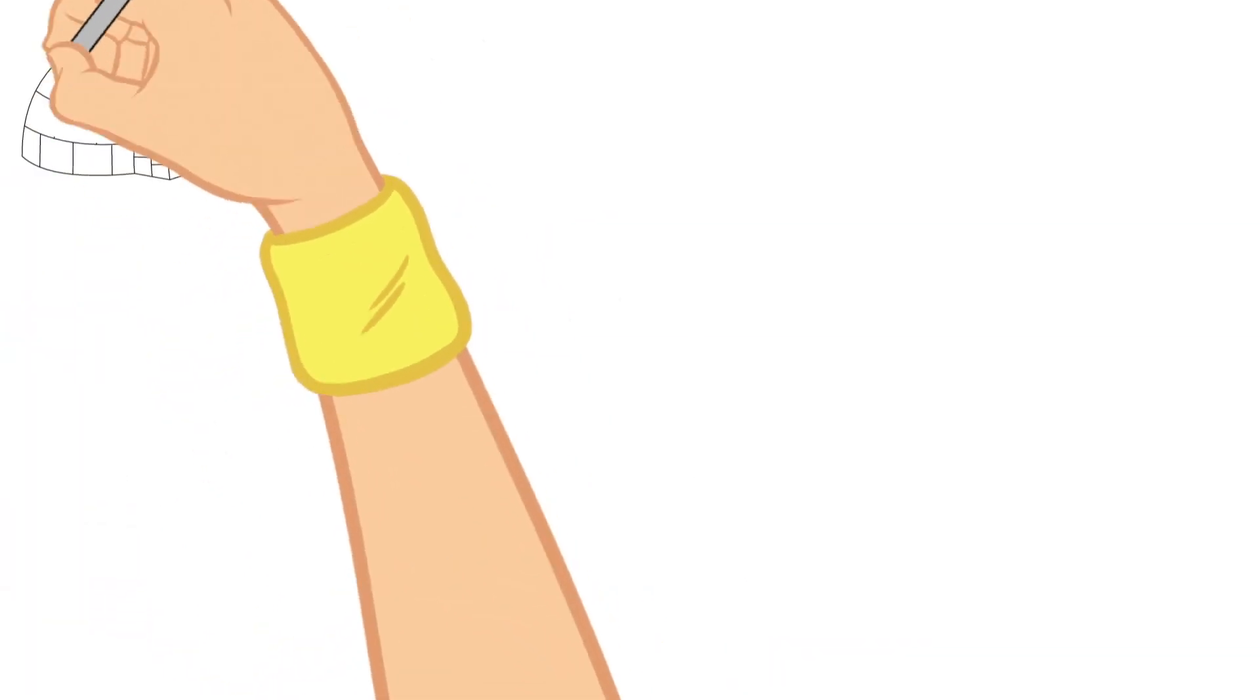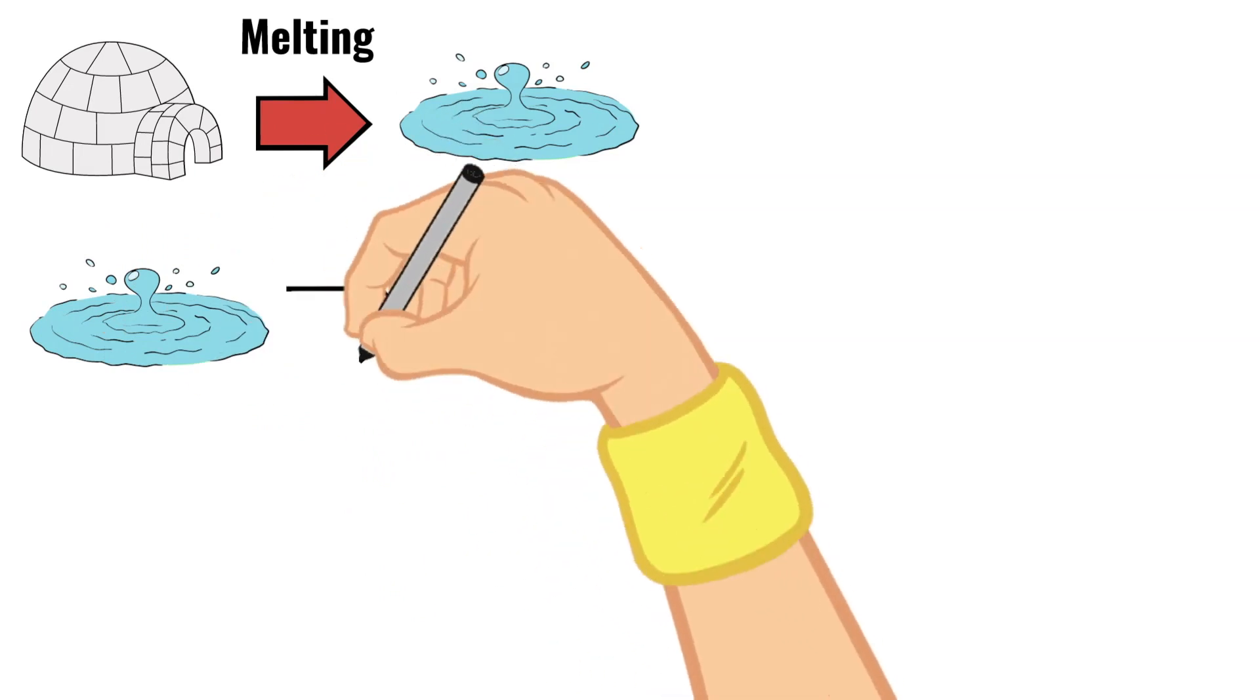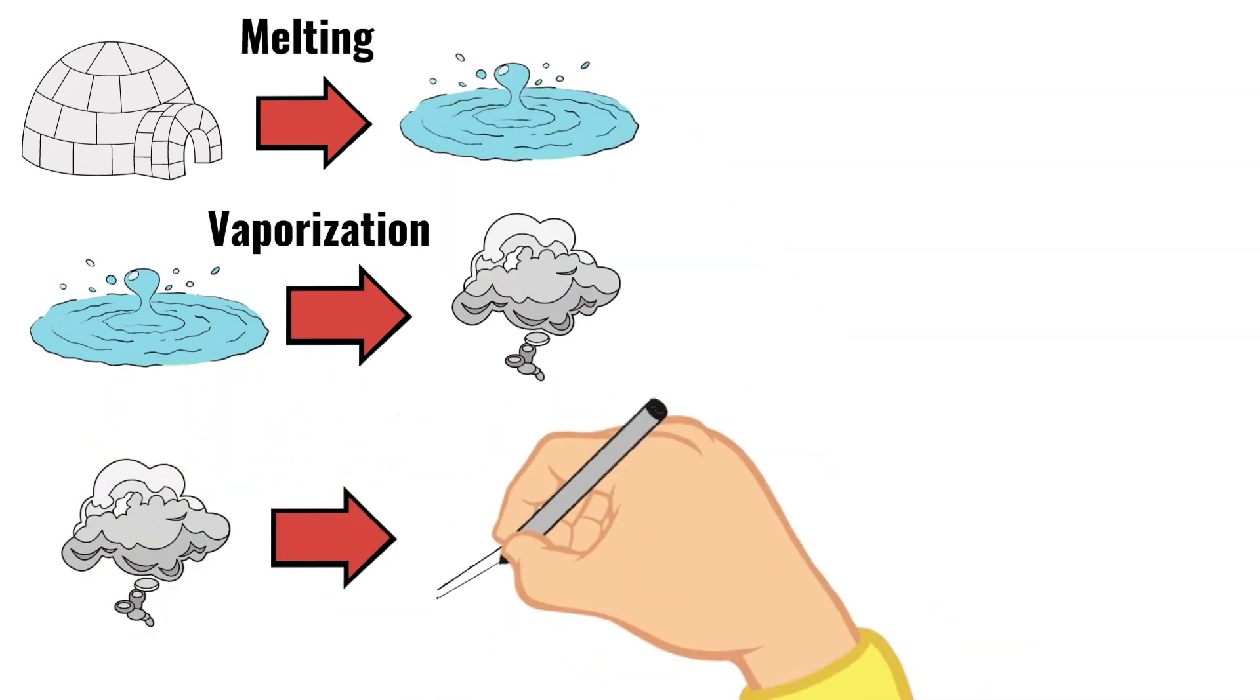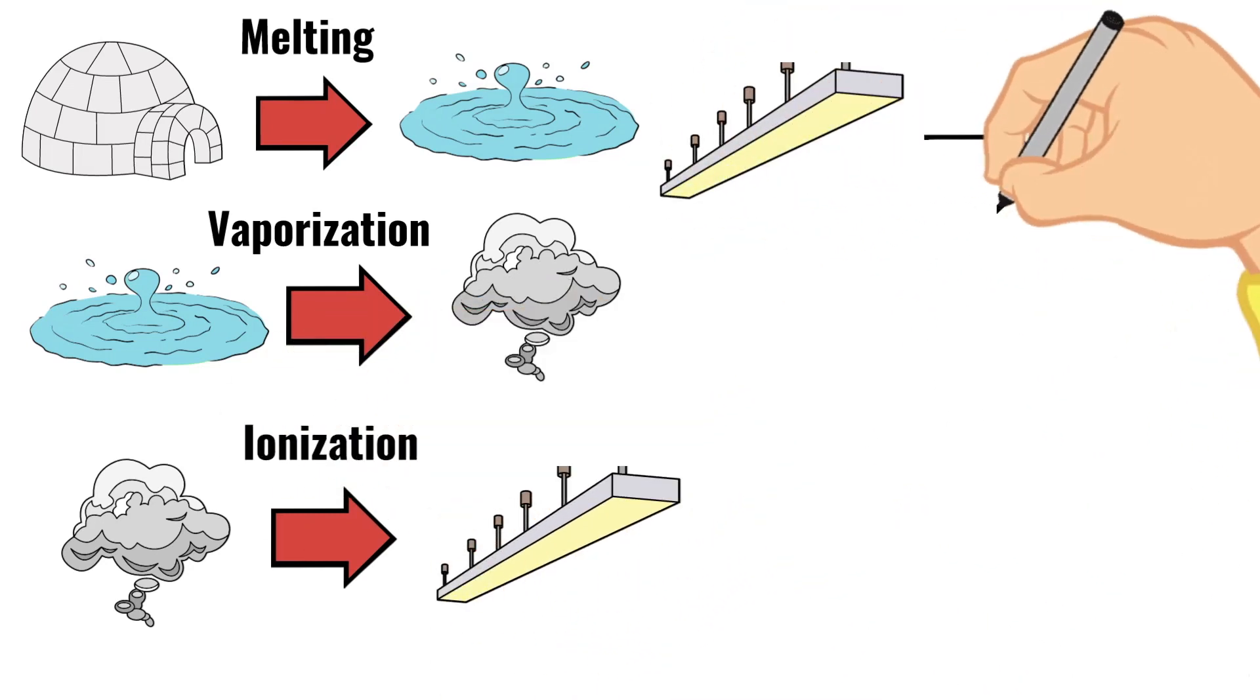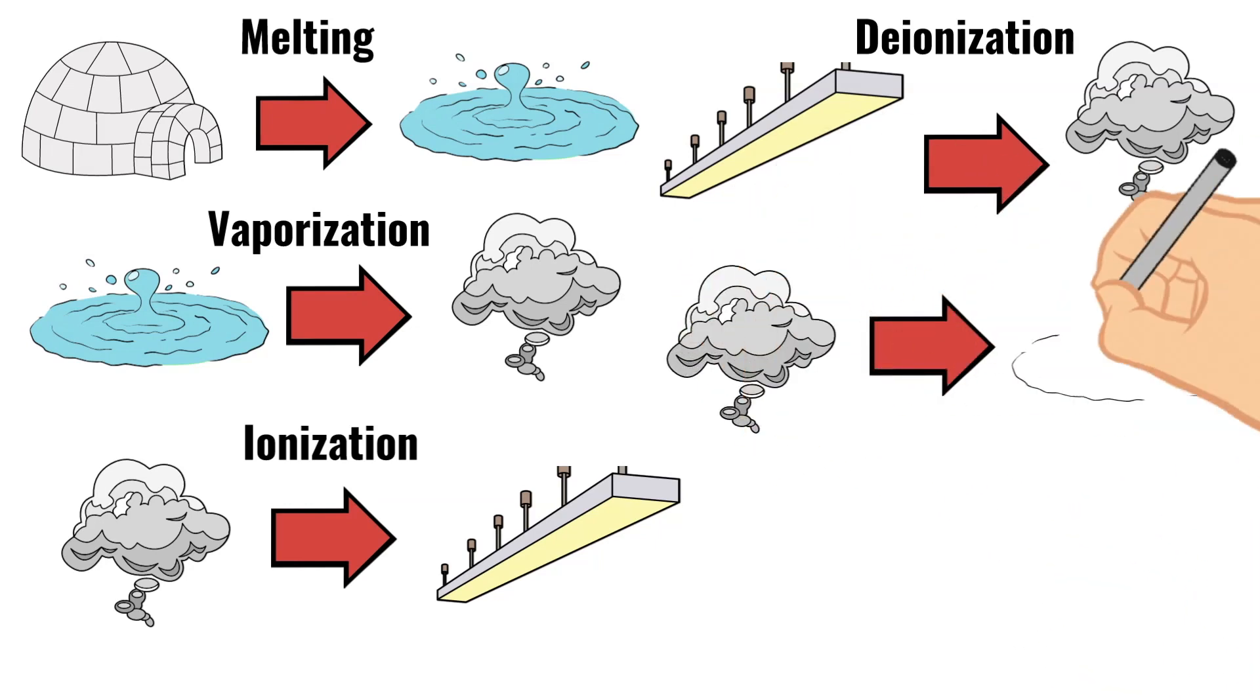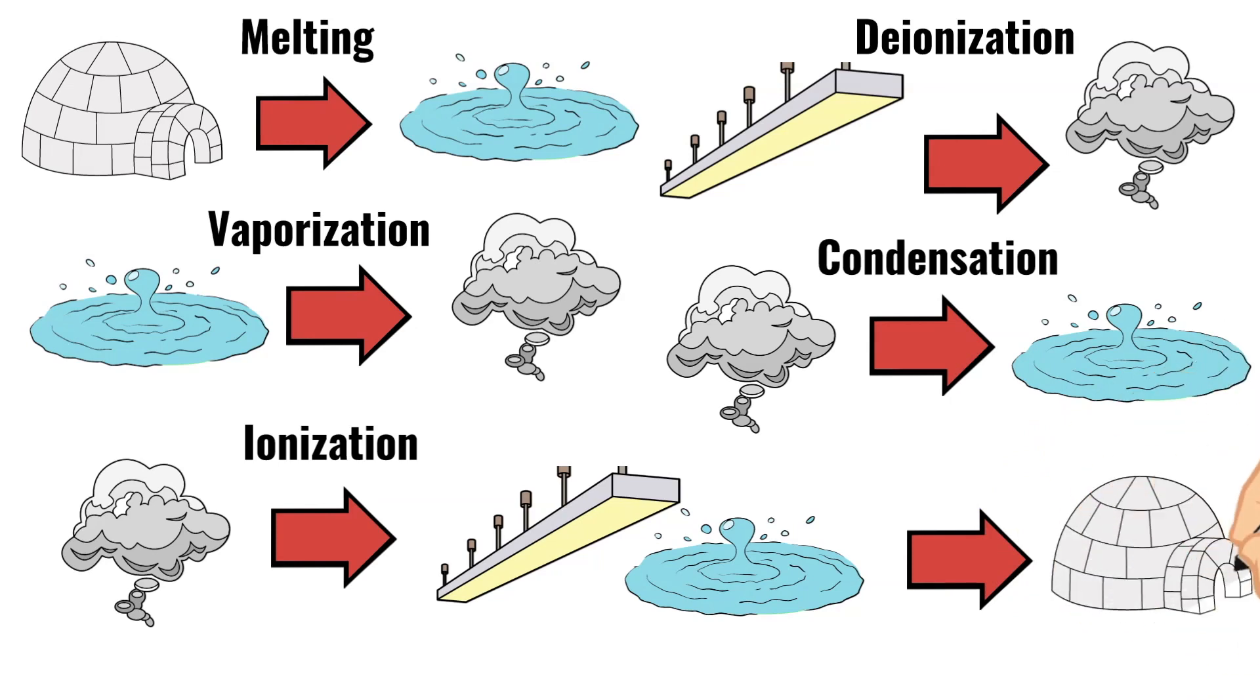There are several terms that scientists use when talking about these phase changes. And they include when a solid changes to a liquid, this is called melting. When a liquid changes to a gas, this is called vaporization. When a gas changes to plasma, this is called ionization. Then going back down, when a plasma changes to a gas, this is called deionization. When a gas changes to a liquid, this is called condensation. And when a liquid changes to a solid, this is called freezing.